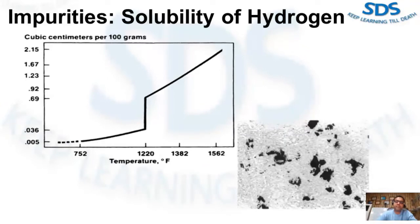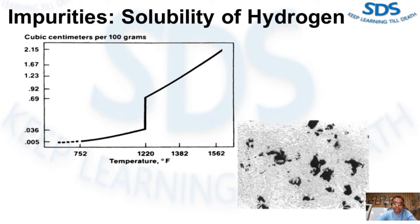Where does hydrogen come from? Moisture and humidity in the factory air can decompose to its elemental form of hydrogen and oxygen. Byproducts of combustion in fossil fuel-fired furnaces, organic contaminants on scrap, die casting release agents, plunger lube residues, fluxes, and almost any other material that comes in contact with molten aluminum can be sources of hydrogen.